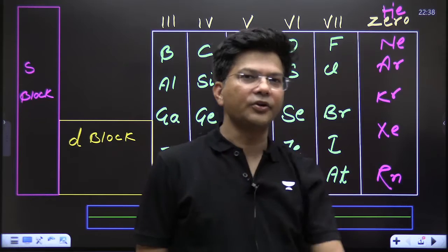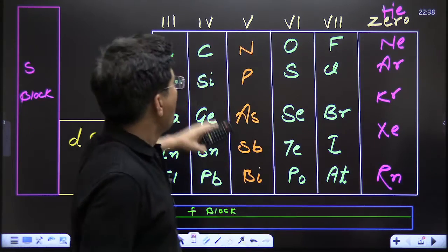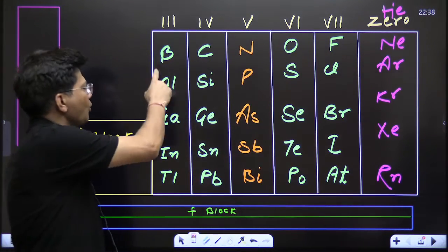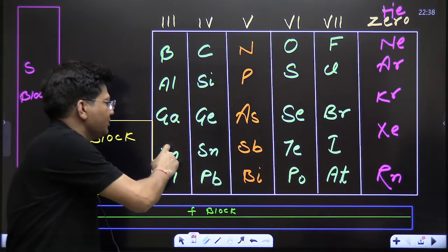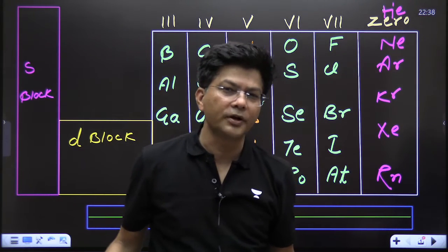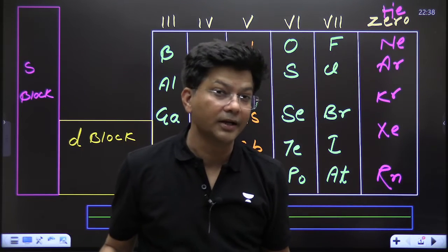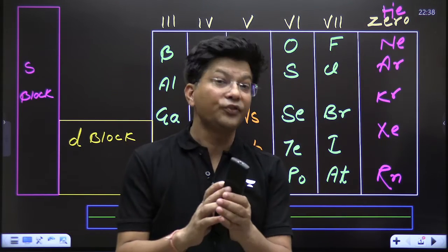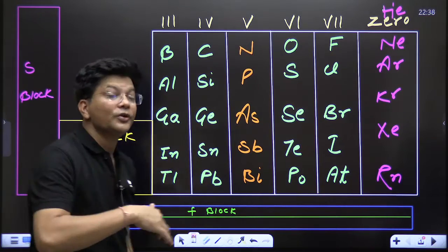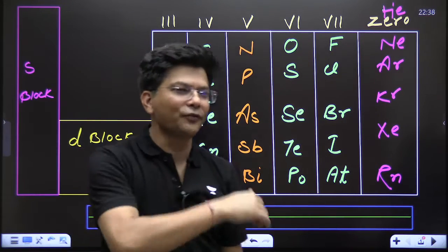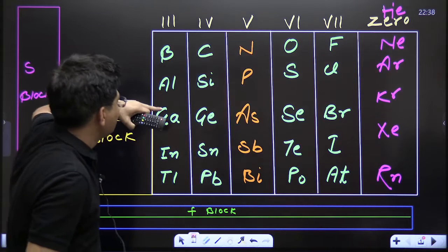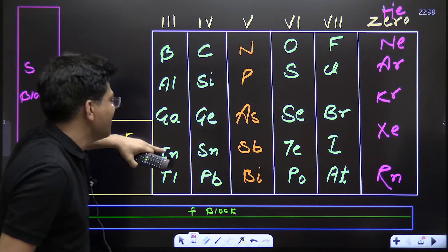See — boron, aluminium, gallium, indium, thallium. You can learn it directly, but if you can't, here is a mnemonic: 'Bal Gangadhar in Thailand.' Remember all these elements will have three electrons in the outermost orbit.